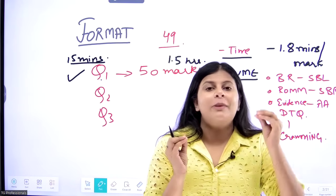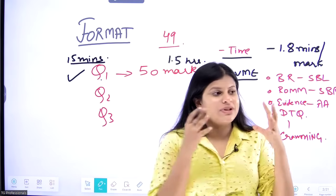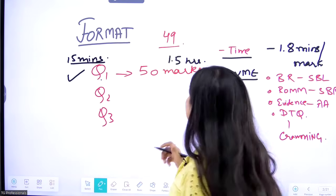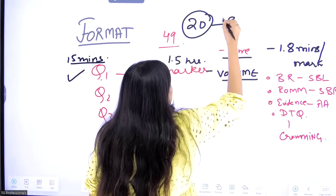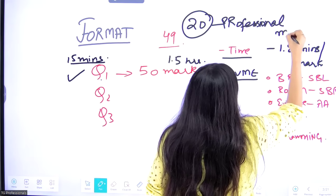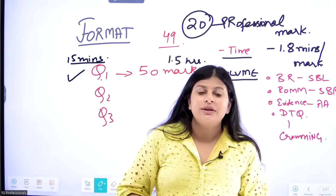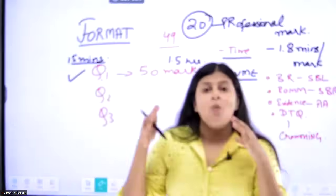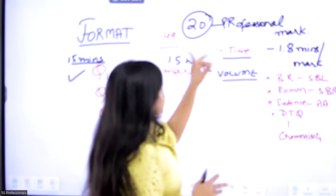Unlike SBR, where writing one point earned one mark, here it's different because there are 20 professional marks — 20 freaking professional marks. The person checking your paper has the power to decide whether you fail or pass. You need to impress that examiner via your paper and your knowledge, since you can't meet them face to face.